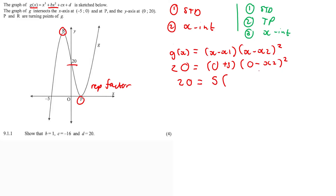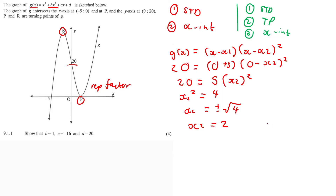Dividing both sides by 5, we get x₂² = 4. Keeping variables on the left-hand side, we square root both sides to get x₂ = ±2. Since P is on the positive x-axis, it's definitely positive 2. So x₂ = 2, and we can substitute this value in.